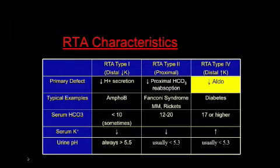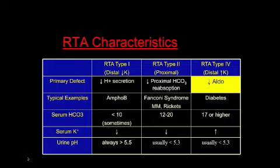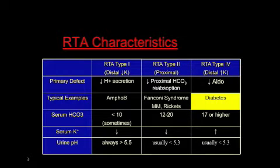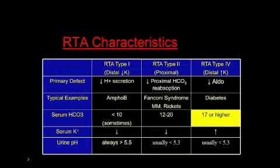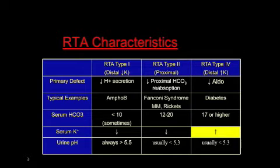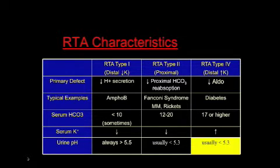RTA type 4 is due to hypoaldosteronism. Aldosterone causes sodium reabsorption in the distal tubules and potassium excretion through a sodium-potassium exchanger, so when that's low, you retain potassium and you dump sodium. An example is diabetes. Serum bicarb is still low, but oftentimes greater than 17. Serum potassium this time is high. And again, urine pH is less than 5.3 because the kidneys can excrete hydrogen ions.